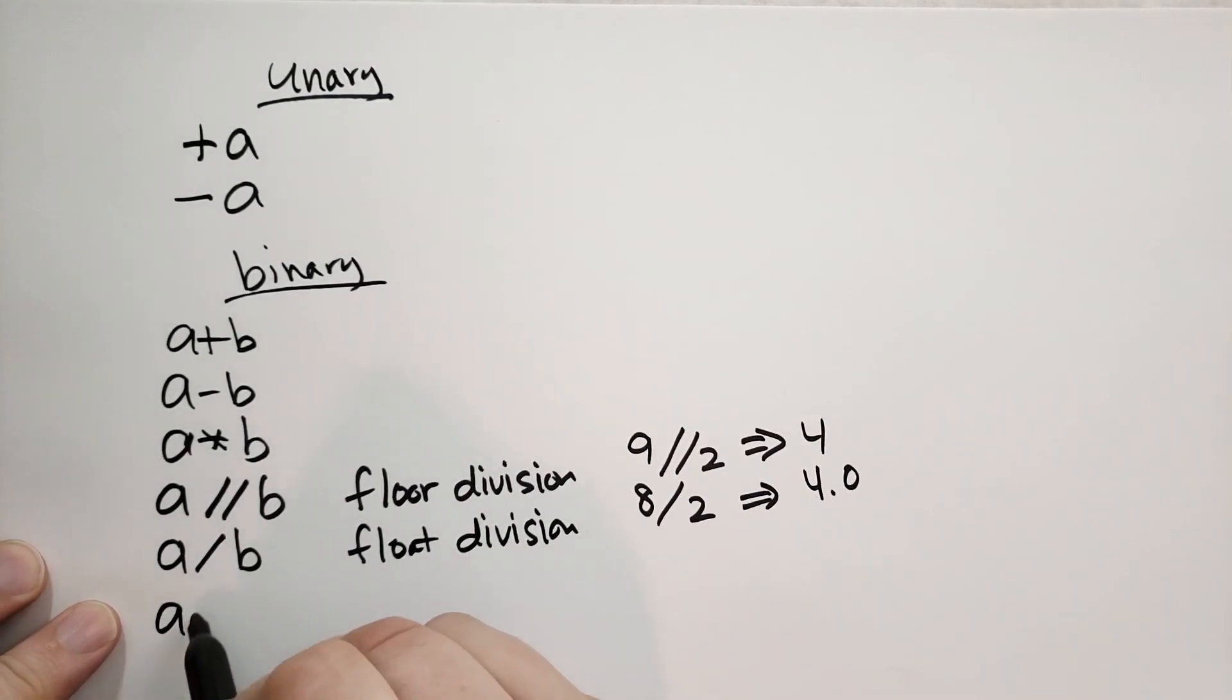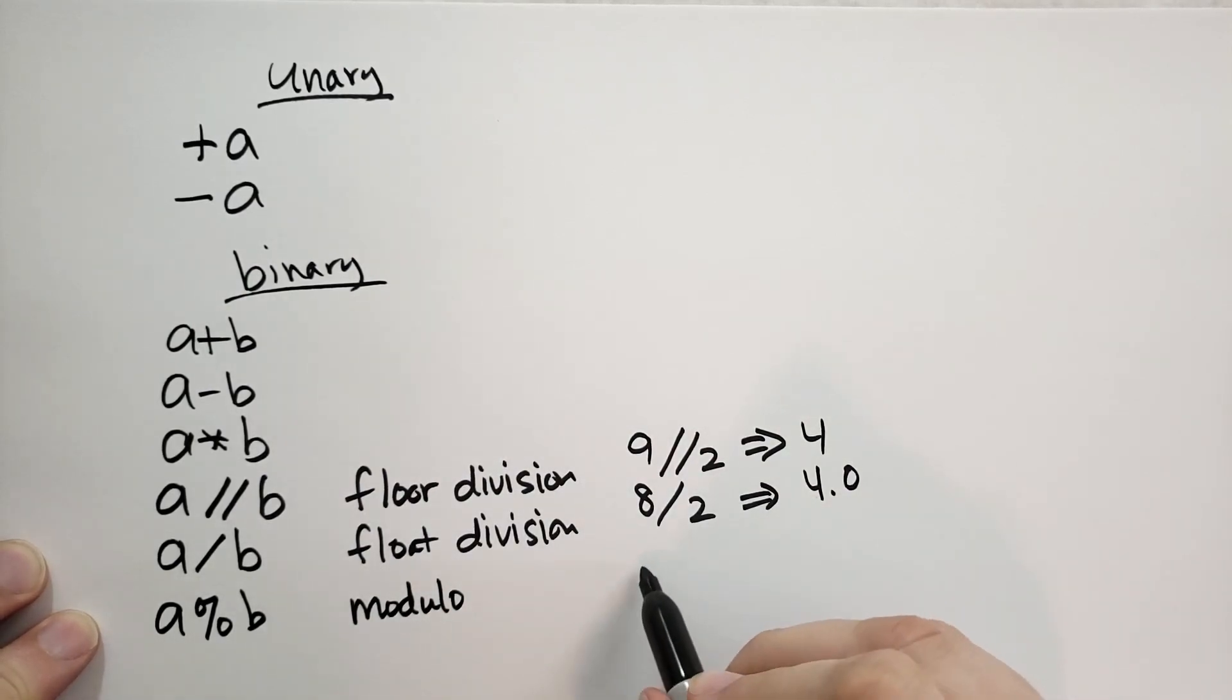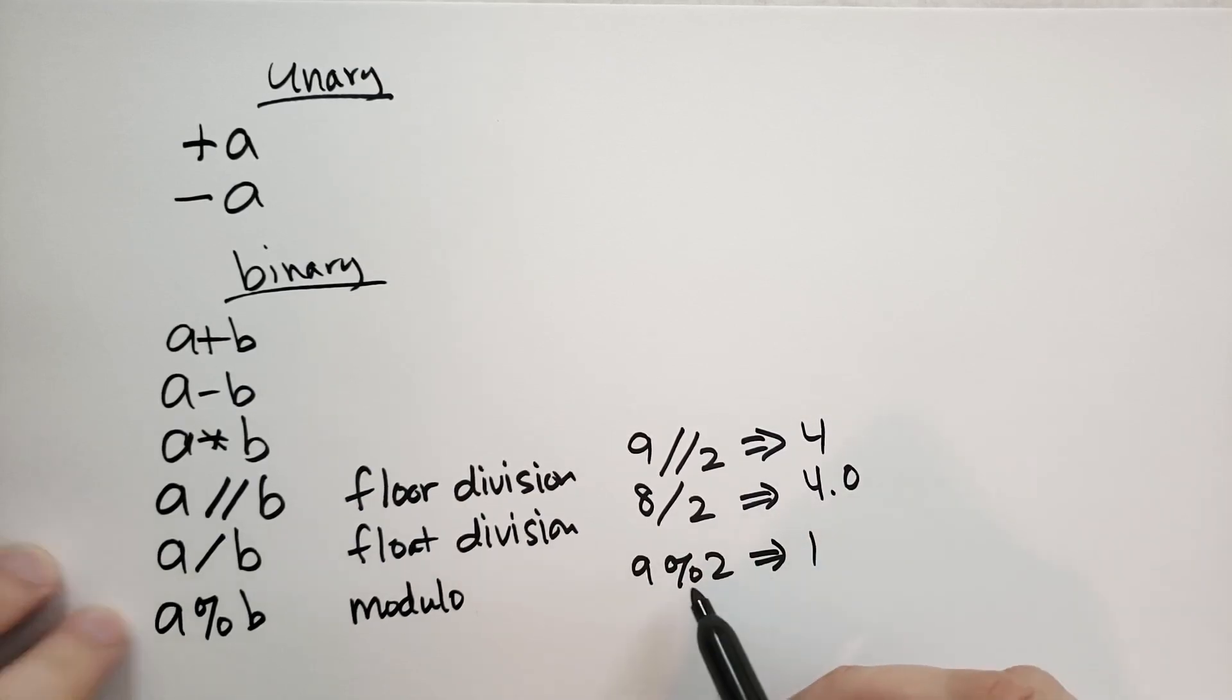And we also have this weird operator, A percent B. This is called modulo. It's pretty common in computer science and in programming. What this does is it will give you the remainder after you divide. So this is going to give you one, because nine divided by two, the remainder is one.